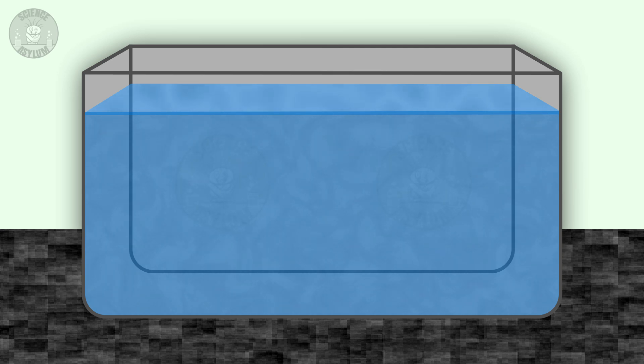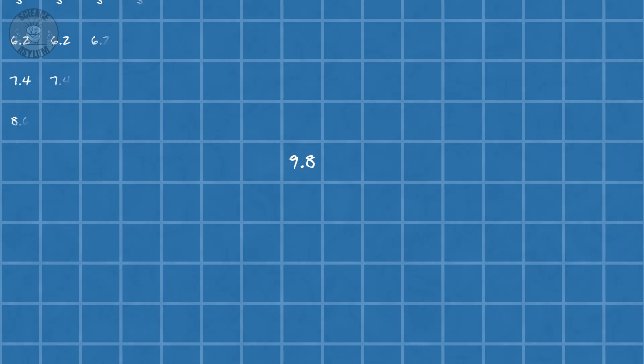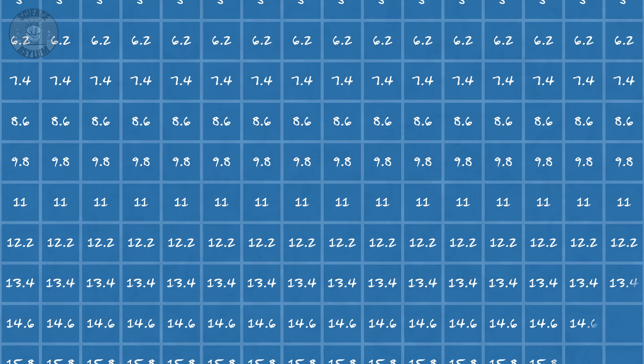At this point, some of you might be wondering: why does any of this matter? Because it tells us what's going to happen. Elevation isn't the only number we can assign to points in space. Say you've got a tank full of water. Let's imagine the water is made of very tiny water cubes. Each of those cubes has a pressure exerted on it from the surrounding cubes. We'll measure that pressure as a number and assign it to the cube, and we'll do the same for all the other cubes in the tank. This is something we might call a pressure field.